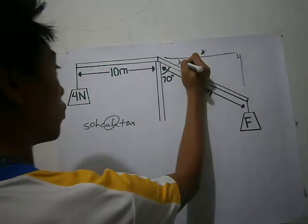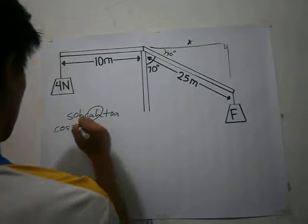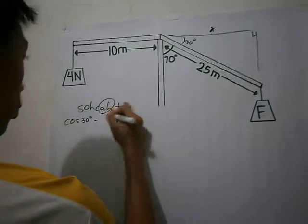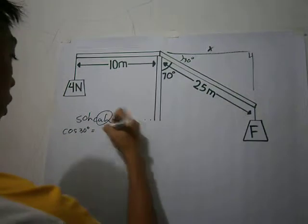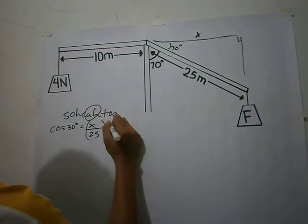Cosine 30 equals adjacent X over hypotenuse 25. Multiply both sides by 25.